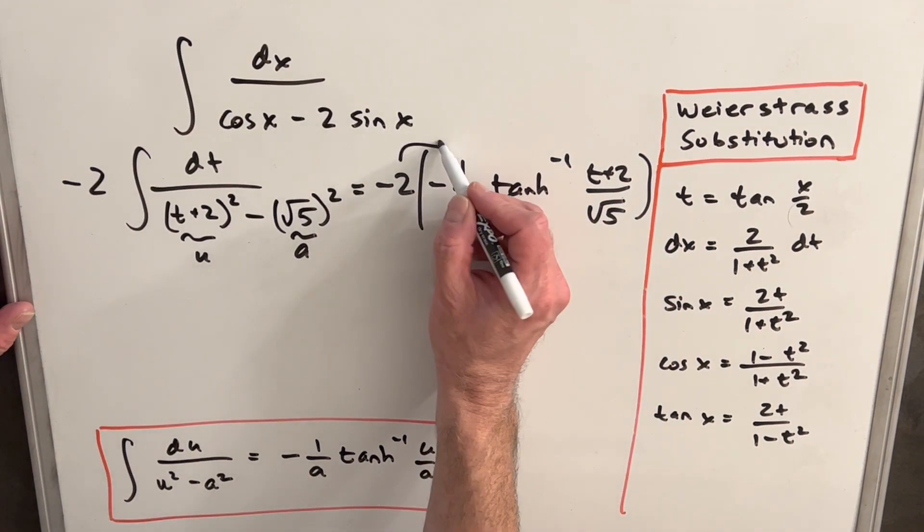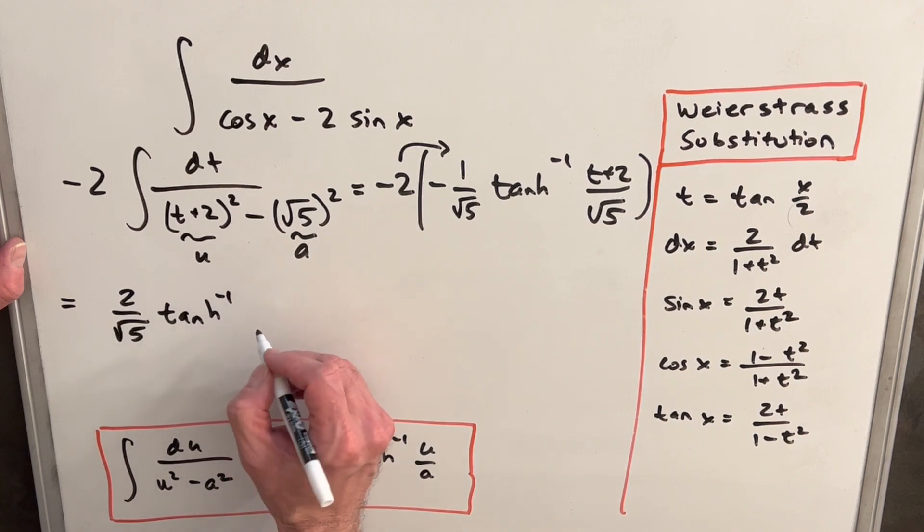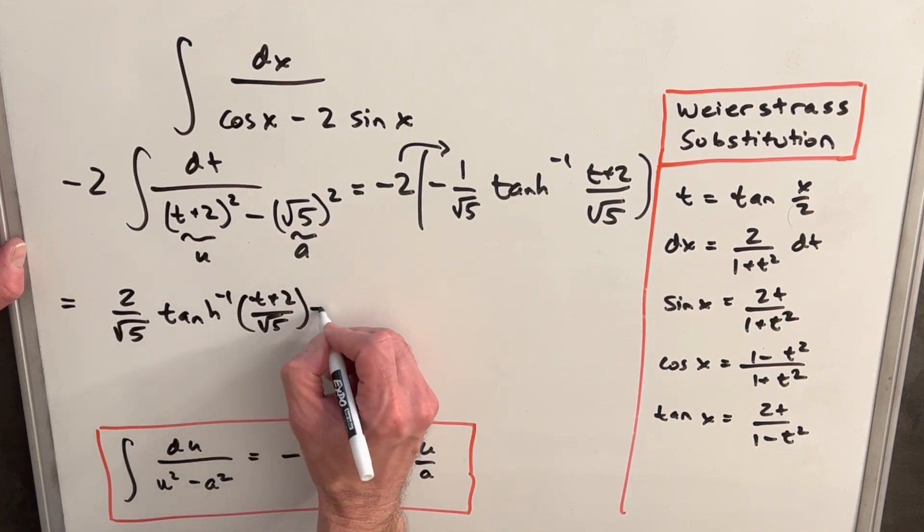Then we're getting close. We just want to multiply in this minus 2 to clean it up a little bit. And we're going to have 2 over square root of 5 hyperbolic inverse tangent of t plus 2 over square root of 5 plus c.